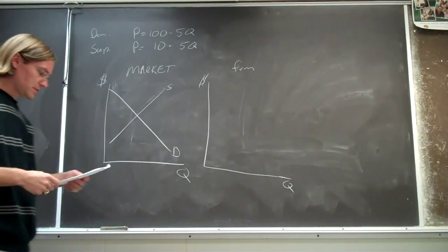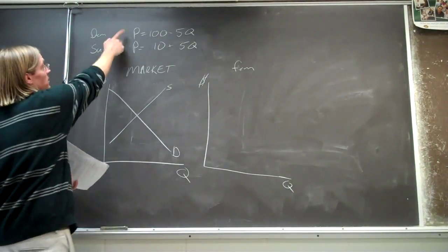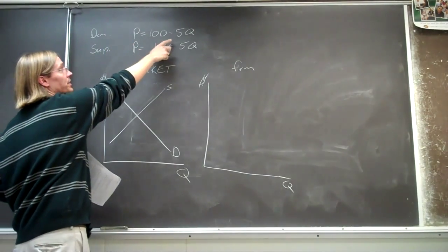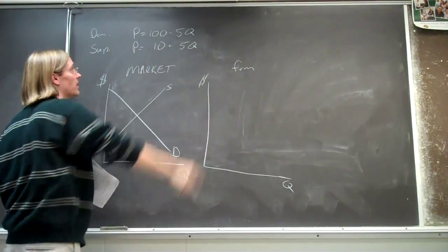All right, so this question on perfectly competitive markets, we're given a demand equation, P equals 100 minus 5Q, and a supply equation, P equals 10 plus 5Q.